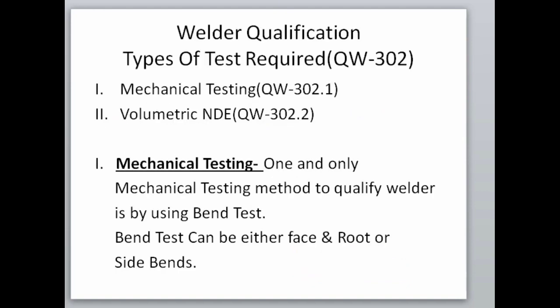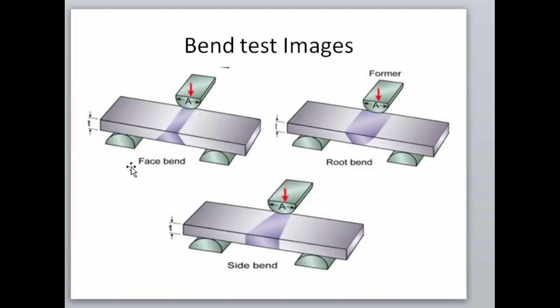The one and only mechanical testing method used to qualify a welder is by using the bend test. The bend test can be either face and root bend or side bends. In face bending, the face of the specimen will be in tension, and in root bending, the root of the specimen will be in tension. In side bending, one of the sides of the specimen will be in tension.